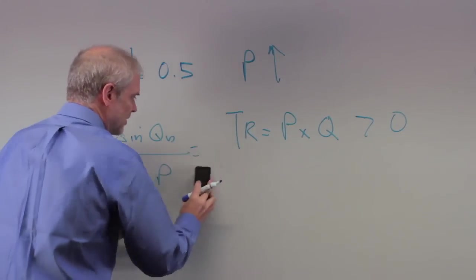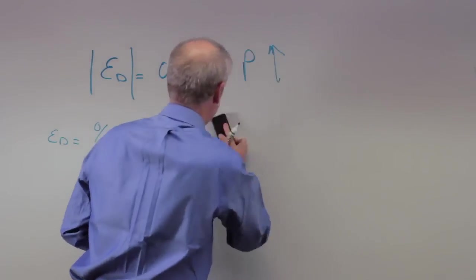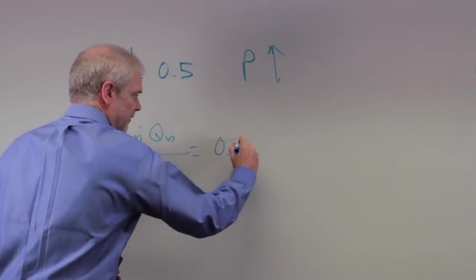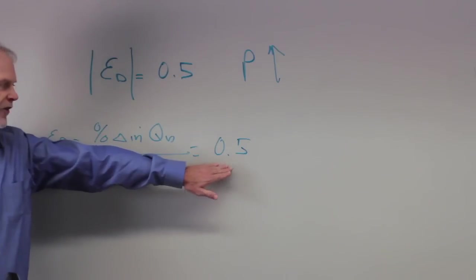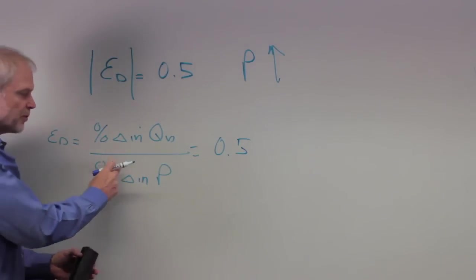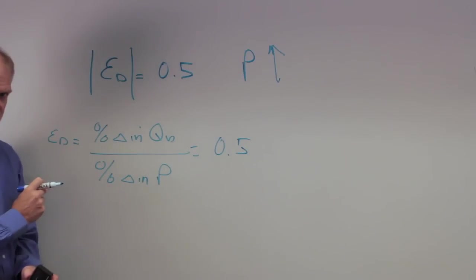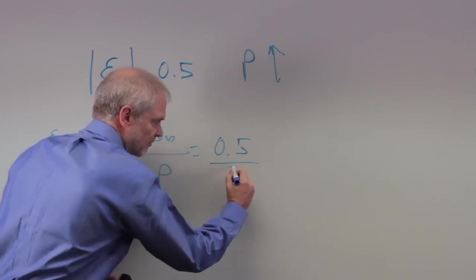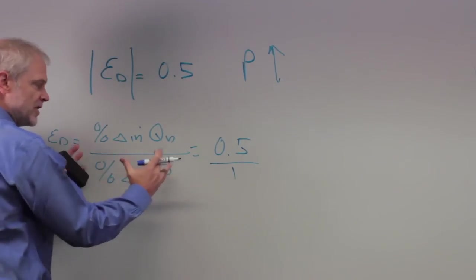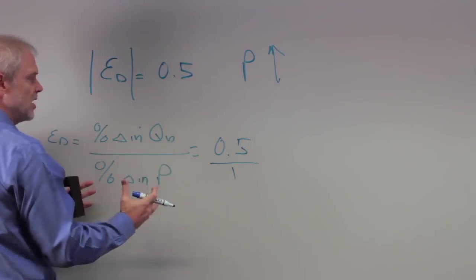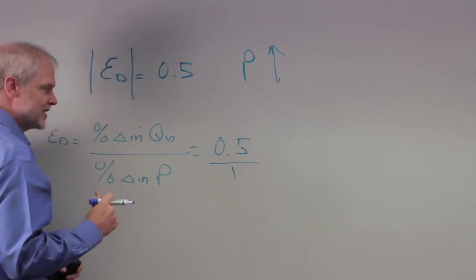Again, we go back to our formula. This is equal to 0.5. So now, interpret this for me. What this says is that for every 1%, for example, increase in price, quantity demand is going to fall by half a percent. Implicit in this is a ratio of 0.5 over 1. Again, you're increasing price by, let's say, 10%. Quantity demand is going to fall, in this case, by 5%. So what does that mean for total revenue?